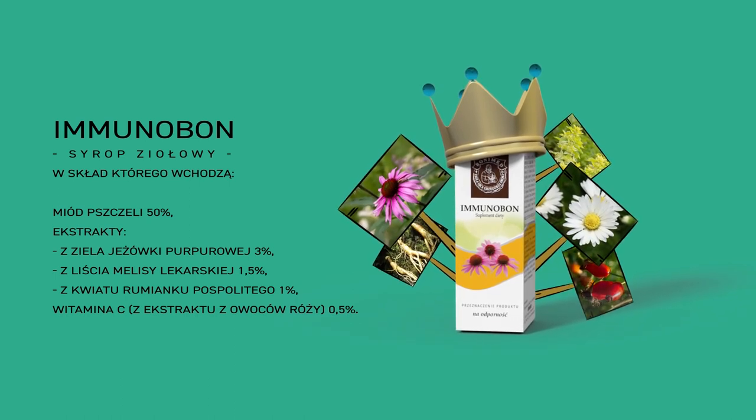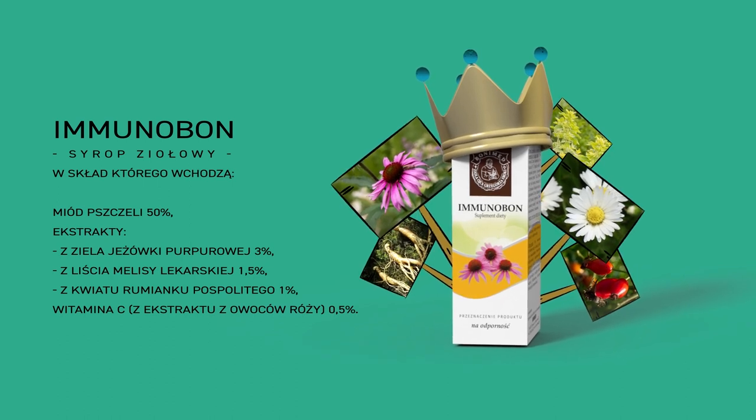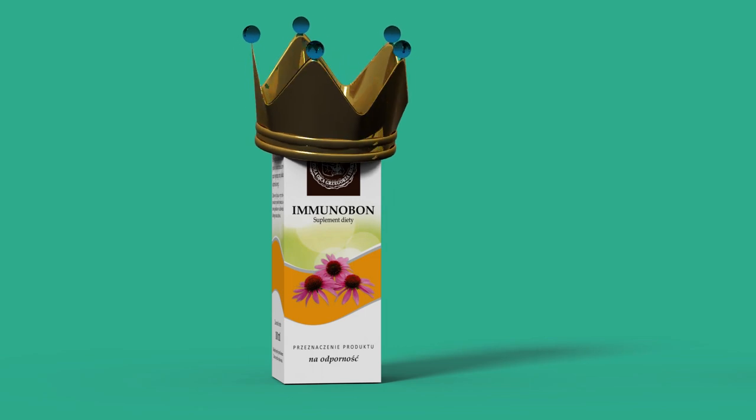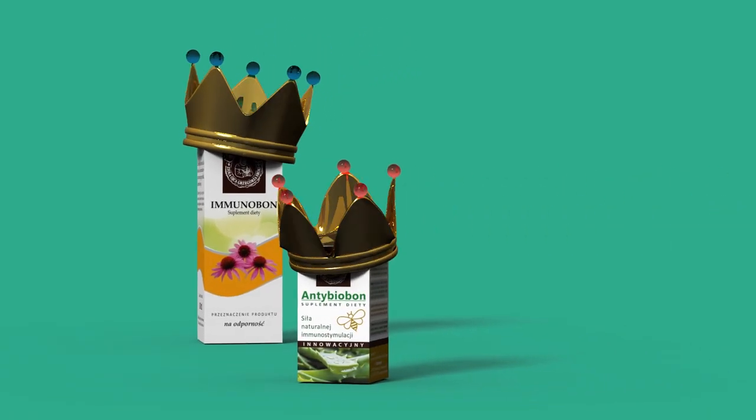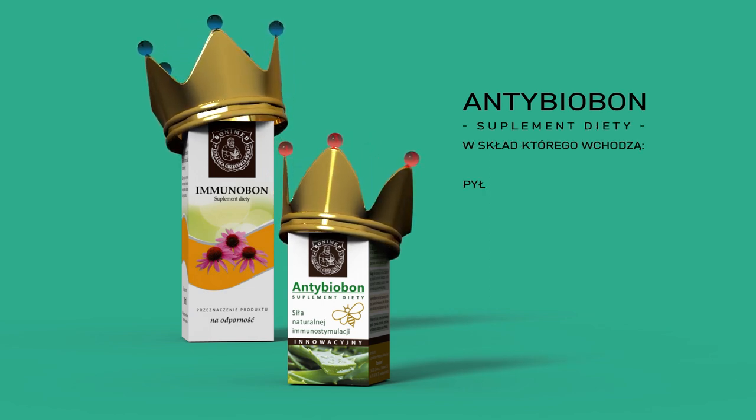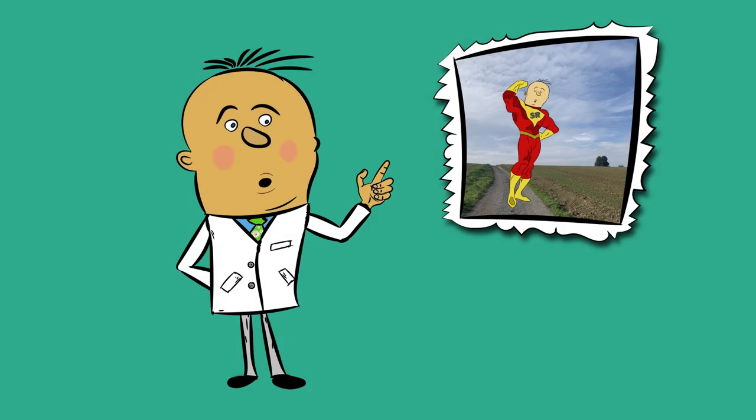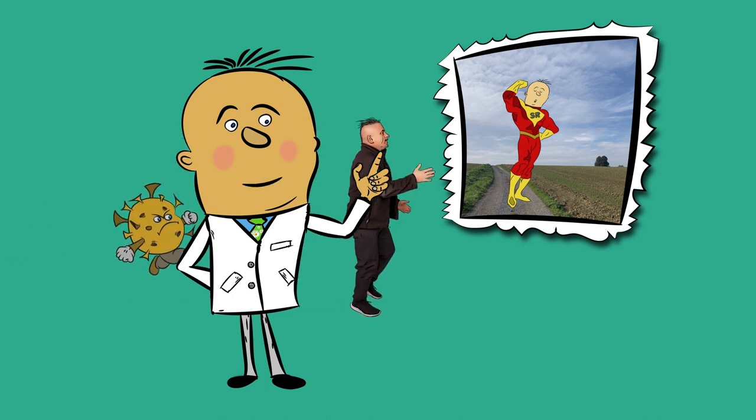Pod nogami ścielą się gęsto płatki i owoce róży – to wyborna witamina C. Półszeptem wam powiem, że w cieniu Immunobona wyrasta młody następca tronu Antybiobon ze zliofilizowanym sokiem zmiążu aloesa, do którego silny afekt czuje pszczoła. A jeśli infekcja niestety nas dopadnie, to co wówczas?